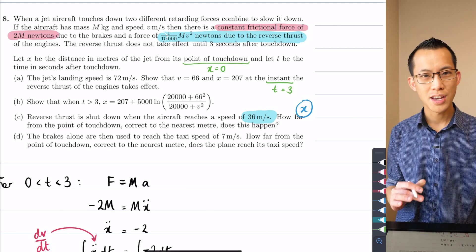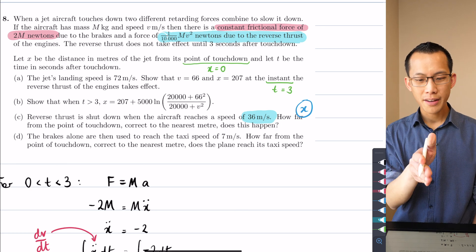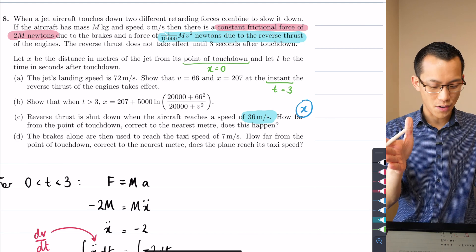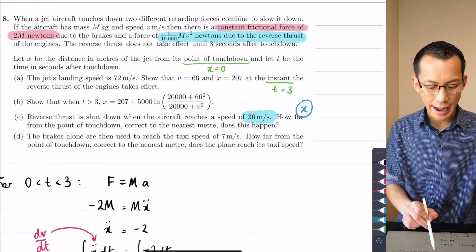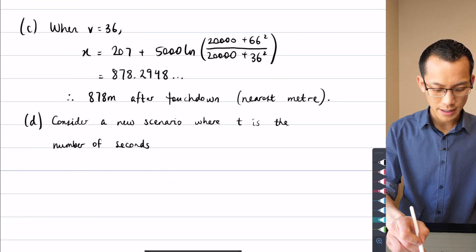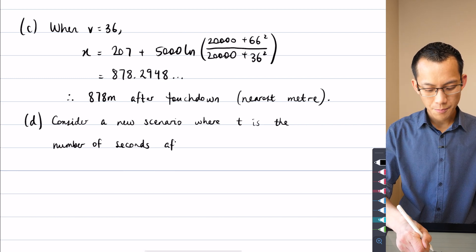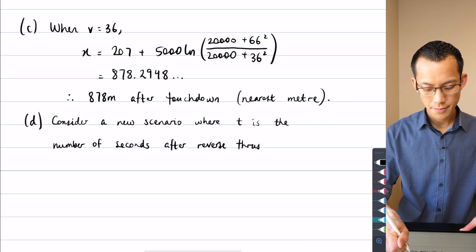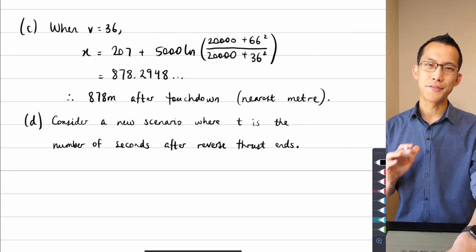I'm going to say, consider a new scenario where, so I'm defining this very, very explicitly, where t is the number of seconds. And what I'm thinking about is, what defines this particular situation? It's not touchdown anymore, if you go back to the question. Rather than now saying this t is from point of touchdown, time in seconds after touchdown, I'm thinking about what happens when the brakes alone are used again. So this is when the reverse thrust shuts down, okay?